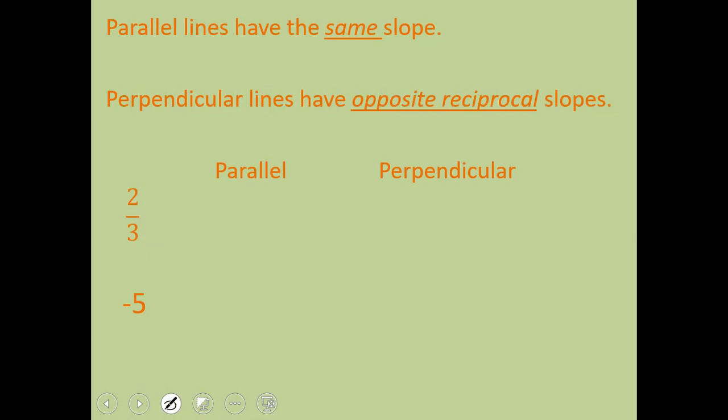Looking at a couple examples on this, if I've got a slope of 2 thirds and it needs to be parallel, it just stays 2 thirds. Perpendicular with opposite reciprocal. Opposite means you change your sign. So you go from positive to negative. Reciprocal means you flip your fraction. So that's going to flip and become a negative 3 over 2.